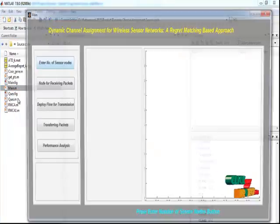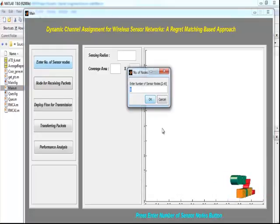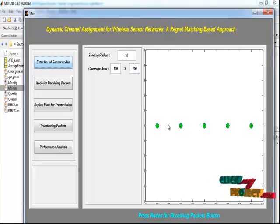Select the main.m file in the current folder, right-click the file and run for executing this process. This is the main window for Dynamic Channel Assignment for Wireless Sensor Networks: A Regret Matching Based Approach. By pressing enter, number of sensor nodes - we have to enter the number of sensor nodes to be participated. Now I am entering 5 number of sensor nodes.